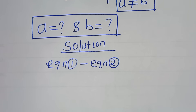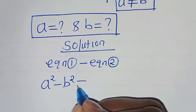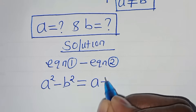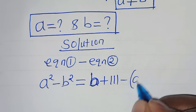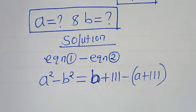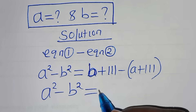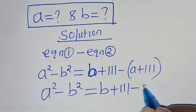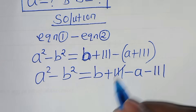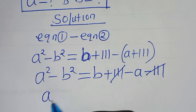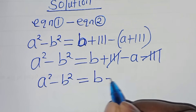This implies that we have a squared minus b squared, which equals b plus 111 minus (a plus 111). So a squared minus b squared equals b plus 111 minus a minus 111. The 111 terms cancel, so a squared minus b squared equals b minus a.